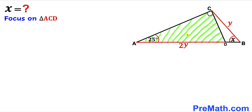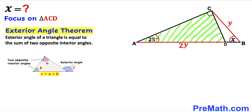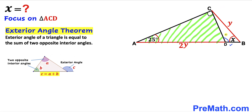Now let's focus on the right triangle ACD and apply the exterior angle theorem. Angle BDC is our exterior angle, equal to the sum of the two opposite interior angles: 25 degrees and 90 degrees. So this exterior angle BDC equals 90 plus 25, which gives us 115 degrees.